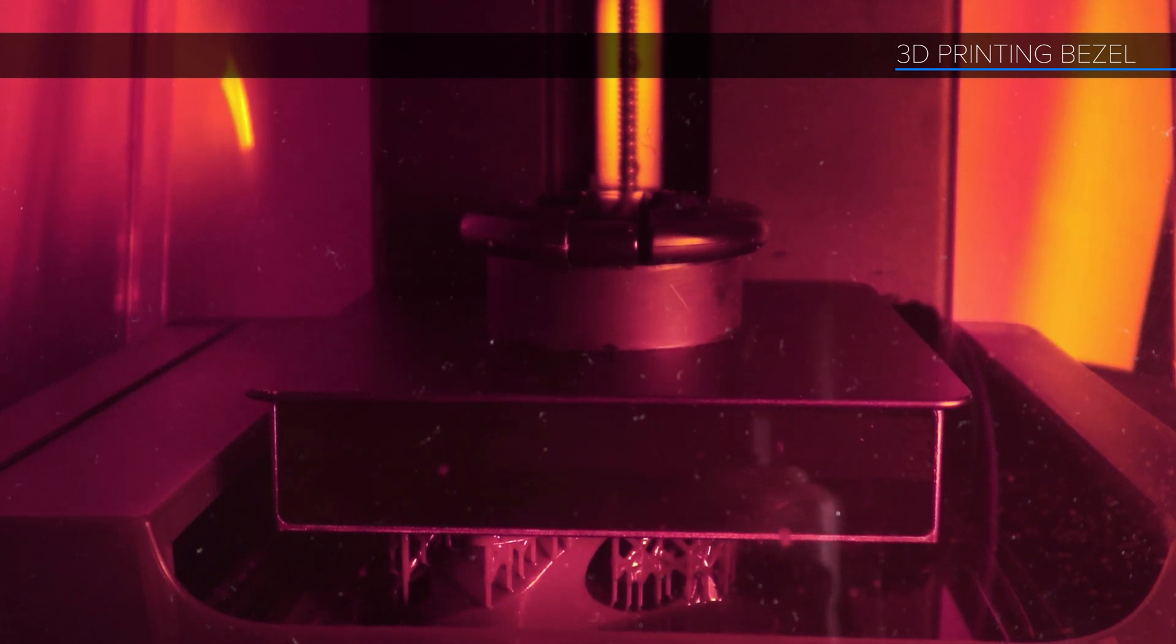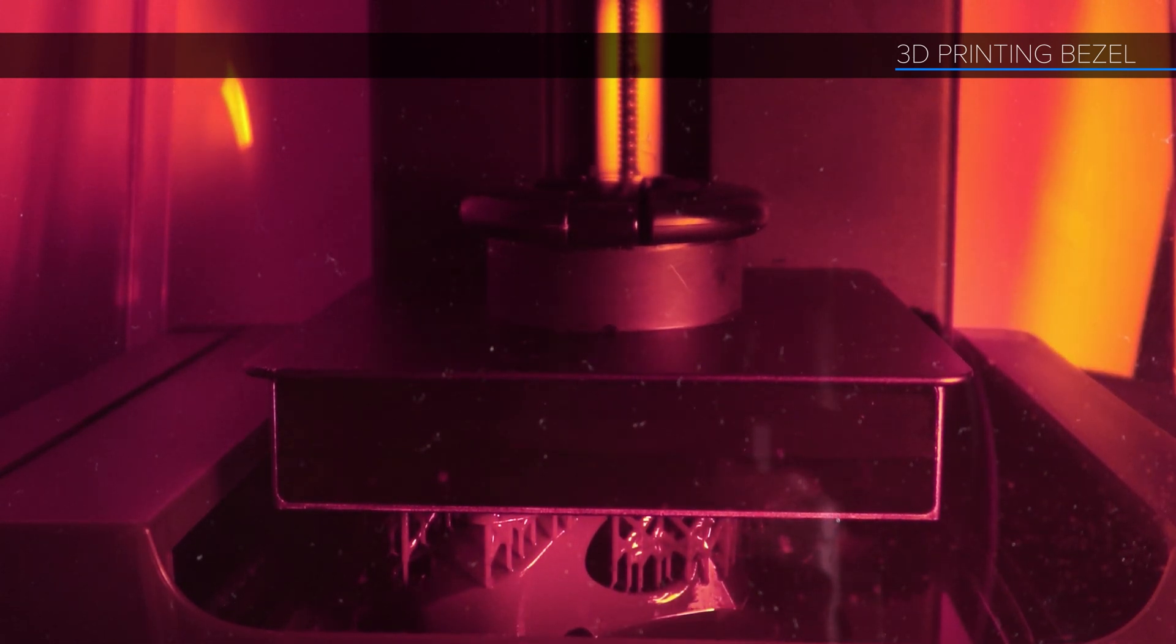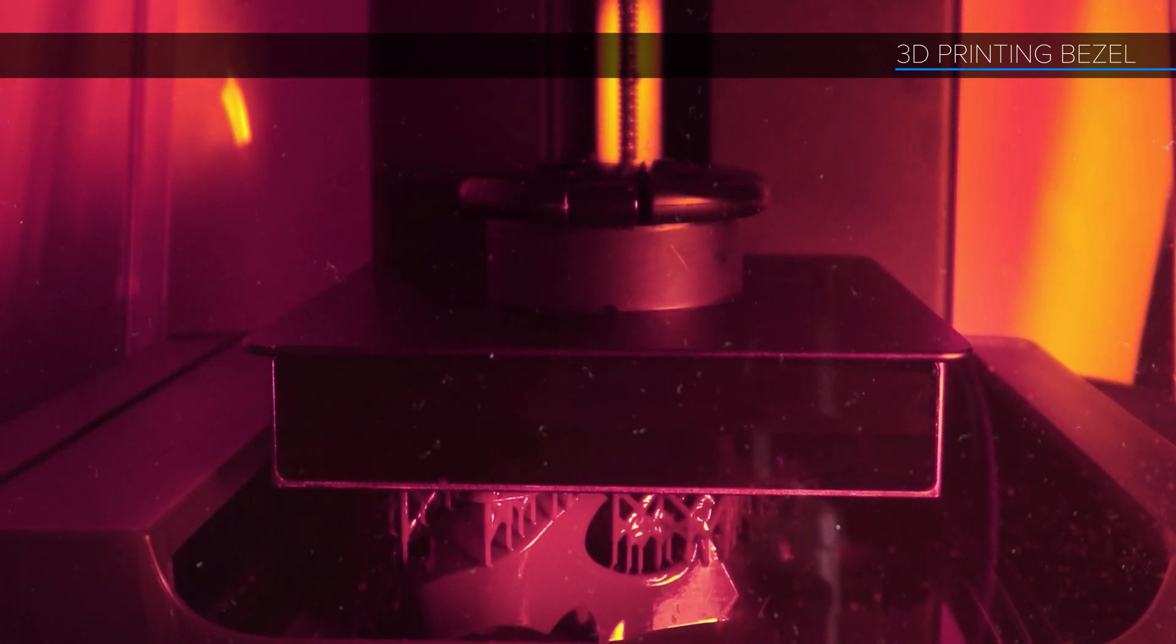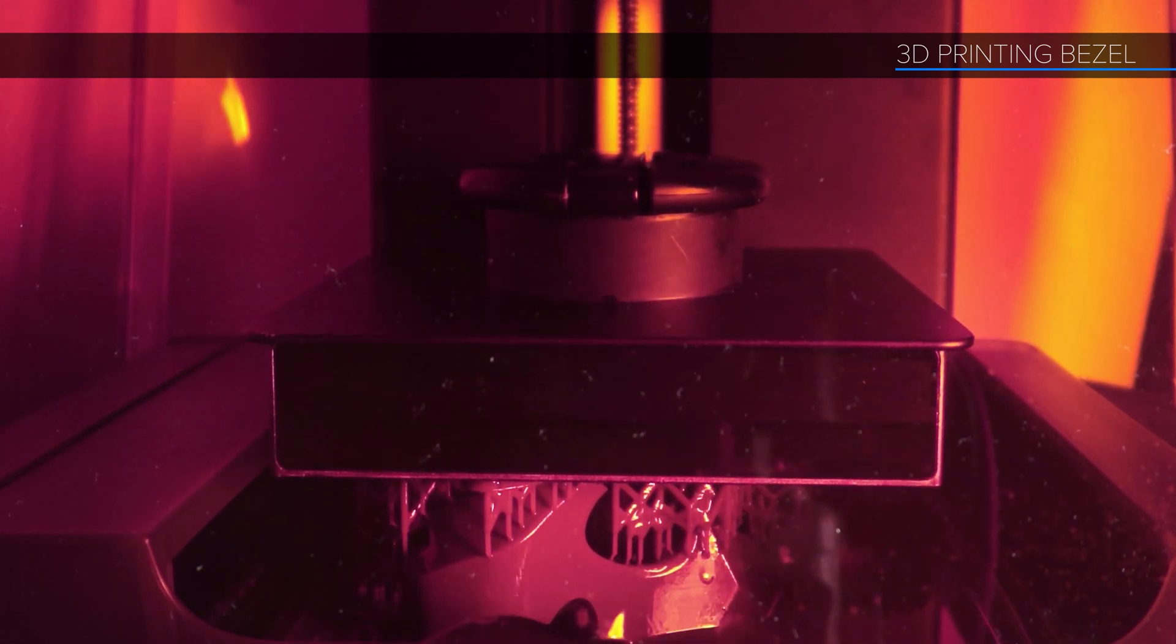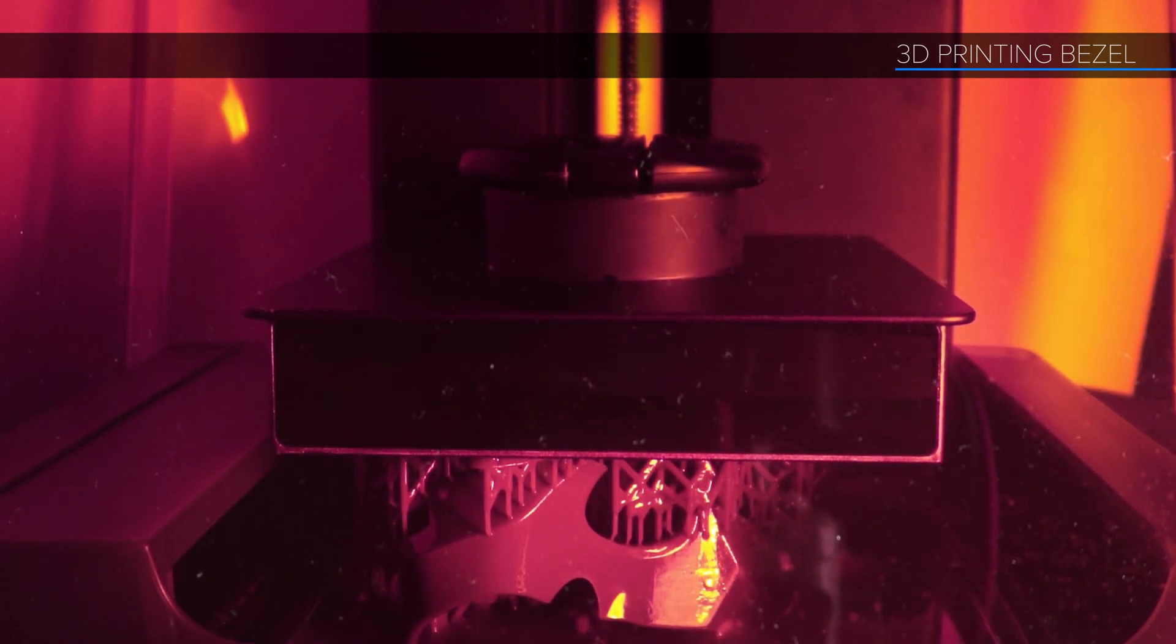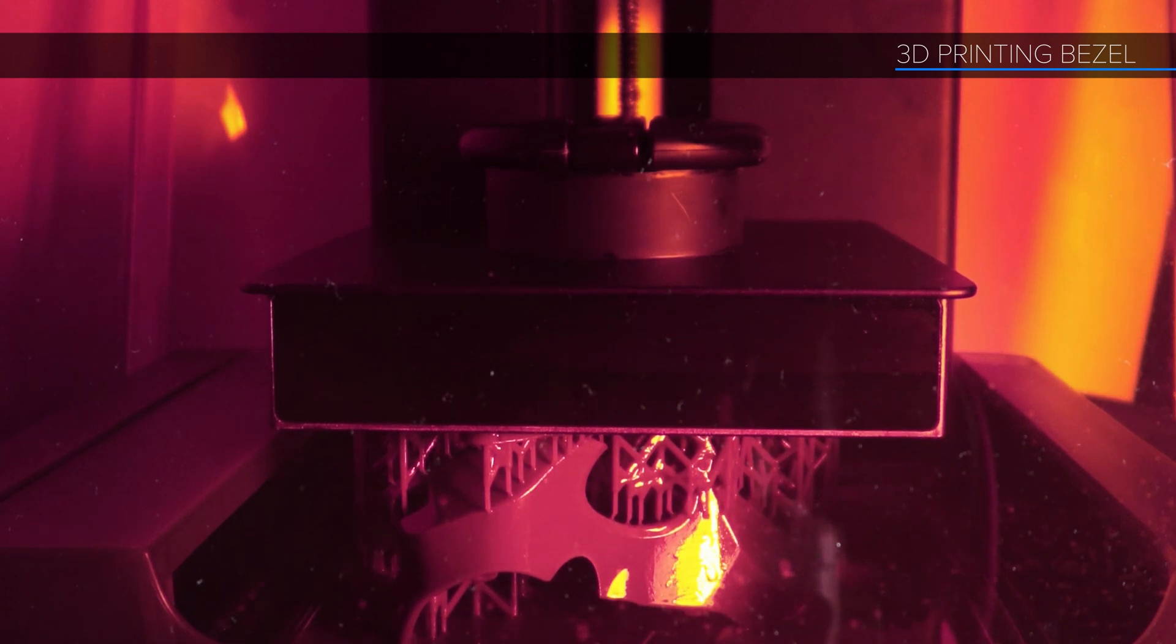I'm not going to show all the print sessions, but the larger parts are looking pretty nice, rising out of the resin in time-lapse. You can see all the support material used in there as well. Large parts like this often need to be oriented at strange angles to fit in the print area.